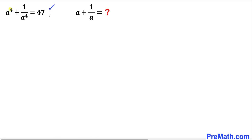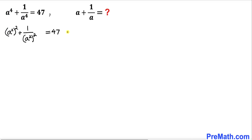Let's focus on this a to the power 4. a to the power 4 could be written as a squared, and then whole squared. Likewise, 1 divided by a to the power 4 could be written as 1 divided by a squared, and then whole squared, as you can see in our next equation.